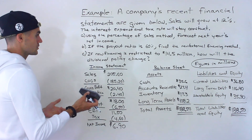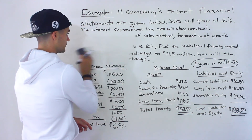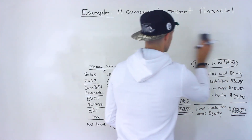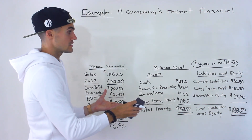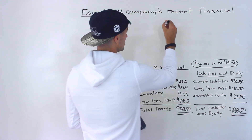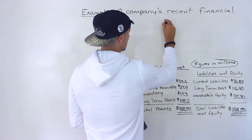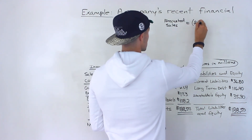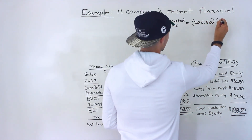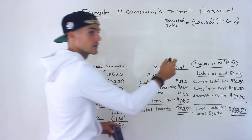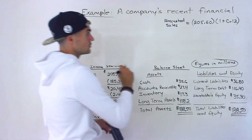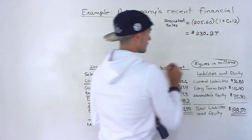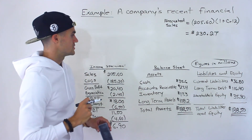The first thing we're going to do — as we did in the previous example — is find the forecasted sales, because that's what most items on these financial statements are going to be based on. To get the forecasted sales, we take the current sales of 205.6 and multiply it by one plus the growth rate of 0.12, which gives us 230.27. I'm going to round all numbers to two decimal places.